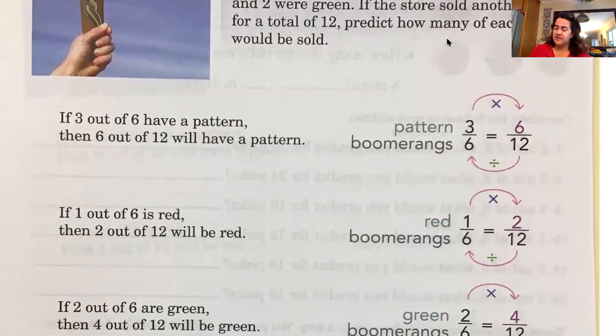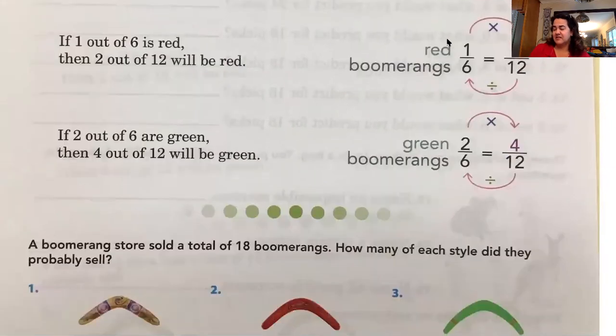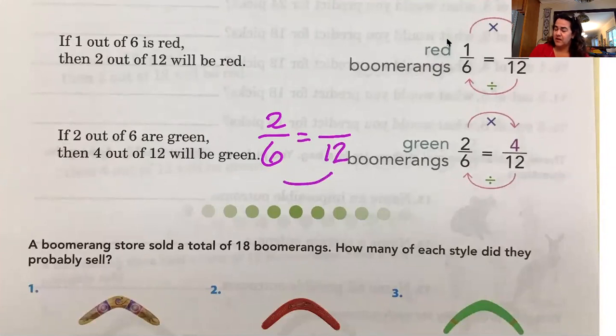So they broke it down this way and they said, If three out of six have a pattern, then six out of 12 will have a pattern. Oh, look, friends, they made them into equivalent fractions. Right? So the total number of boomerangs that were sold was six. And three of those six had a pattern. So then the question said, but what if there were 12 sold? Right? So we take 12 divided by six. Oh, look, it's the backward C that we used. Awesome. So 12 divided by six gives us two. Then we're going to multiply one times two to get two. Okay. Then it asks us friends that if two out of six are green, then how many out of 12 will be green? And if we do our backwards C, that's how you get the answer.